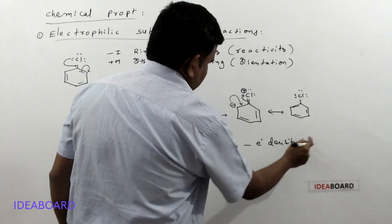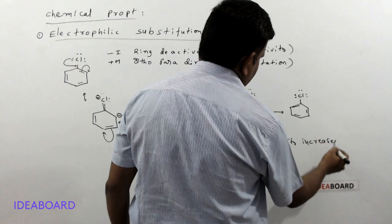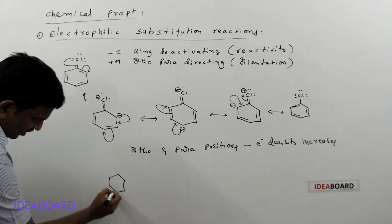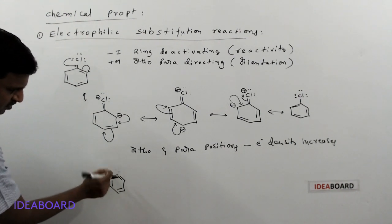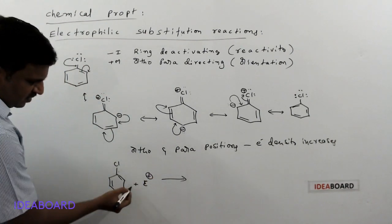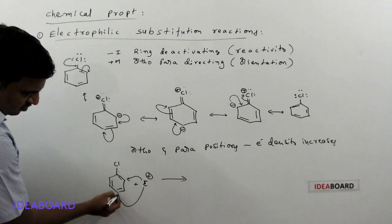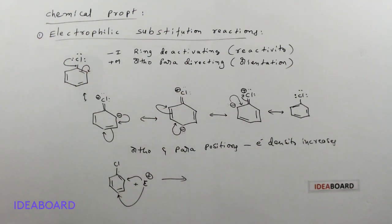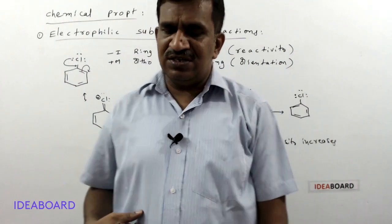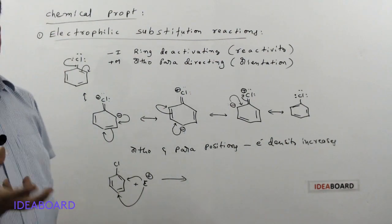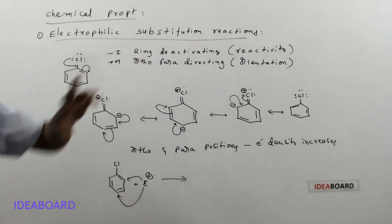Whenever electron density increases, electrophilic substitution occurs — the electrophile attacks those positions. For chlorobenzene, if an electrophile is attacking, it will attack at the ortho position or the para position. That is why chlorine is an ortho-para directing group. But because of the minus-I effect, it has a ring deactivating nature, so it has less reactivity compared with normal benzene, and vigorous or drastic conditions are needed.